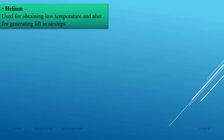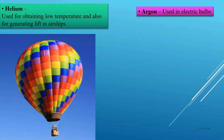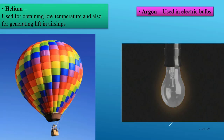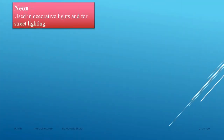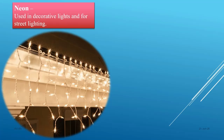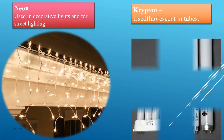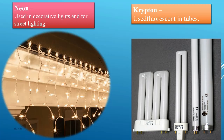Next we have helium, which is used for obtaining low temperatures and also for generating lift in airships. Next is argon, an inert gas which is used in electrical bulbs. Neon is used in decorative lights for street lighting — you must have seen these during festivals like Christmas, Eid, and Diwali, and at weddings. They make use of neon gas present in the air. Then you have krypton, which is used in fluorescent tubes.